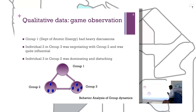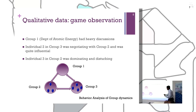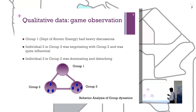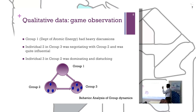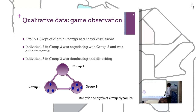What is of greater interest to us is the qualitative data, which relates to game observation. For example, some observations a manual observer makes might include: group one — the Department of Atomic Energy — had heavy discussions; or individual two in group three was negotiating with group two and was quite influential; or individual three in group two was dominating and disturbing. These qualitative observations are fed back to improve the game design.